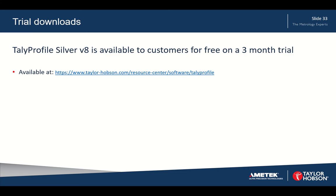For further information, trial downloads of TallyProfile Silver are available for free on a three-month trial. Go to the Taylor Hobson website, navigate to the Resource Center, and under the software tab there is a TallyProfile page. You can fill out a form, download the software, use it for three months, and then get in touch with us — or we can contact you — to see if you want to go ahead and purchase the full version.